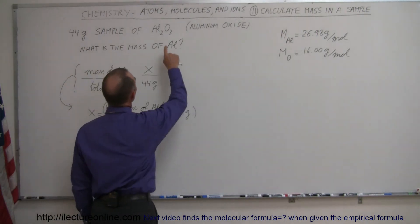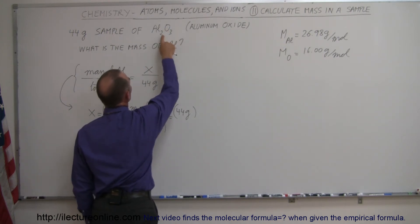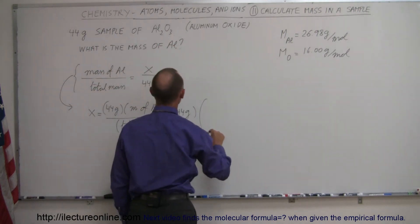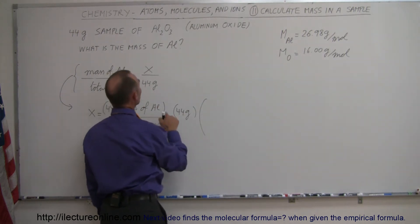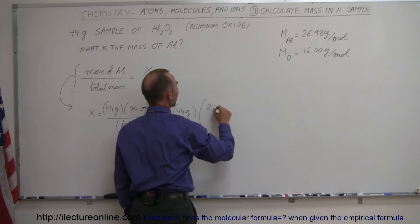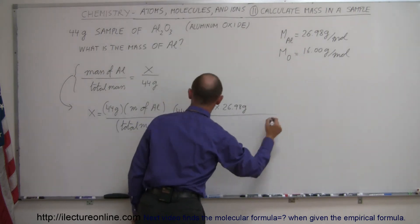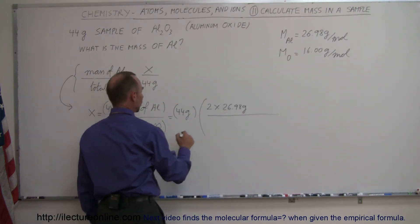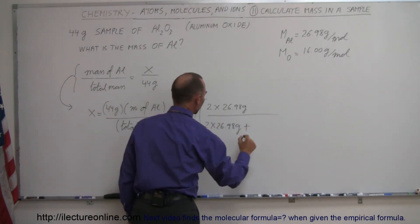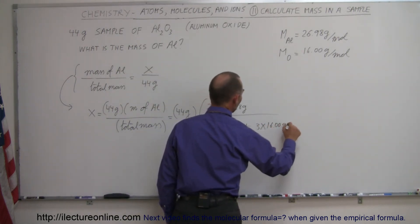We have two moles of aluminum for every three moles of oxygen, or two atoms of aluminum for every three atoms of oxygen. So we can multiply the molar mass — the mass of aluminum is two times the molar mass of aluminum, which is 26.98 grams per mole, divided by the total mass, which is two times 26.98 for aluminum plus three times 16.00 grams for oxygen.